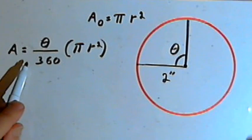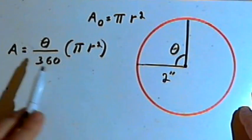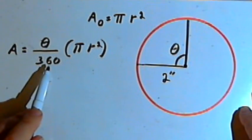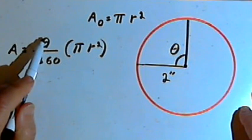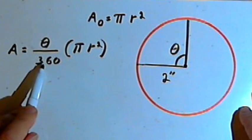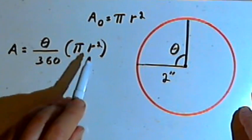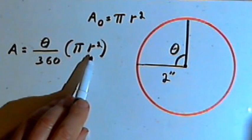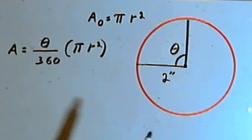So my general formula for the area of a sector is going to be theta over 360, the central angle over the number of degrees in an entire circle, times pi r squared, the area of the entire circle. So let's take that and apply that to a circle with different dimensions.